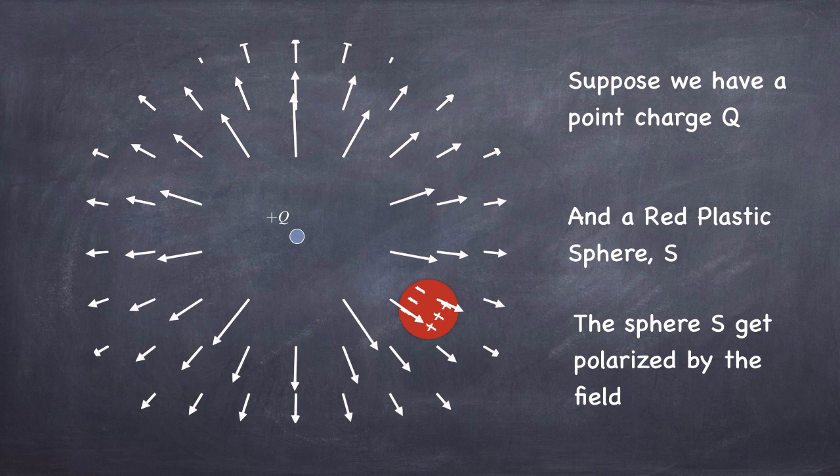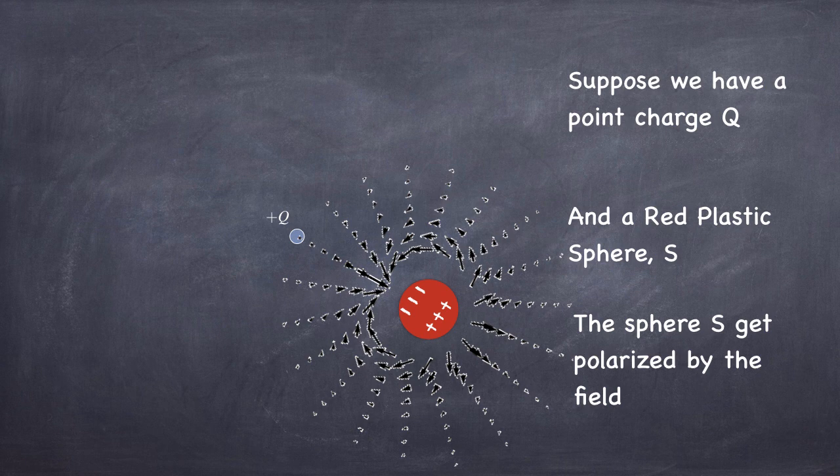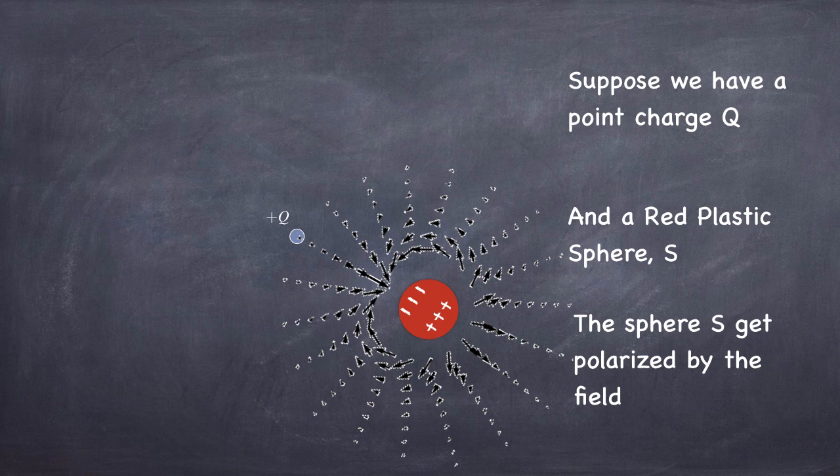But once you've got a polarized sphere, now it has its own dipole field, and that dipole field exists in all the space surrounding the sphere. Now, it drops off much more quickly than the Coulomb field from the point charge, and so by the time you look at the field at the location of the point charge, the field is quite small, but the point charge is pretty big, and so the charge times the field, you get a reasonable force.